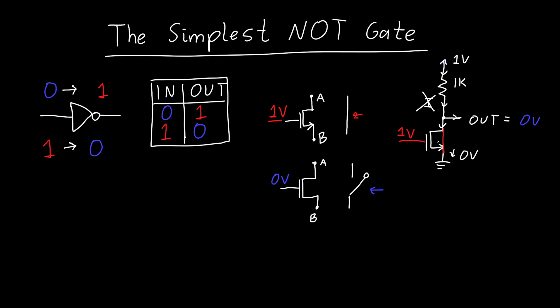So while this might be the simplest NOT gate, in practice, it's actually very rarely used. And in the next video, we'll talk about what is much more commonly used, which is using two transistors.